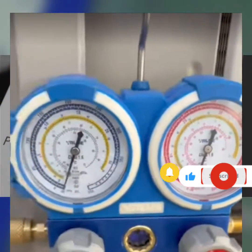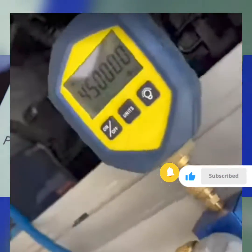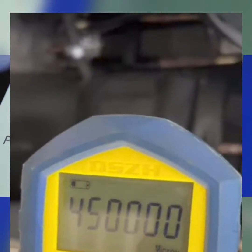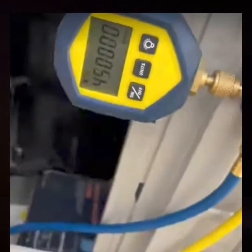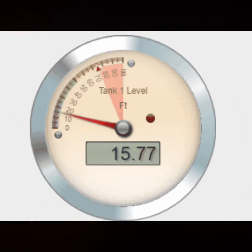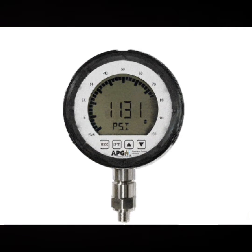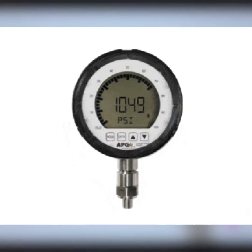Finally, we have digital pressure gauges. They make reading pressure more convenient and precise compared to analog gauges. They usually feature an LCD or LED display and may offer additional features like data logging and wireless connectivity.